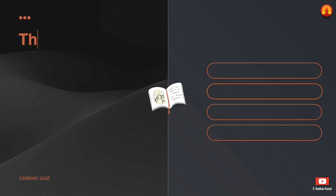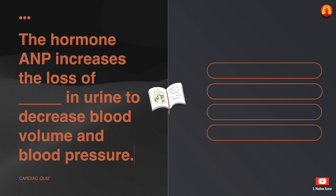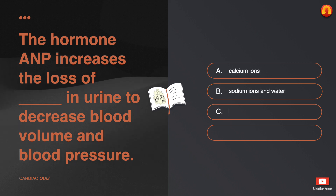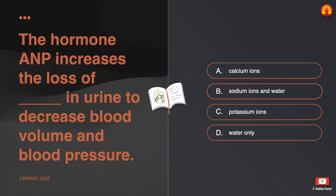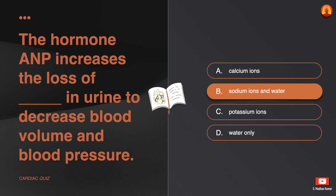The hormone ANP increases the loss of dash in urine to decrease blood volume and blood pressure: A. Calcium ions. B. Sodium ions and water. C. Potassium ions. D. Water only. The correct answer is: sodium ions and water.